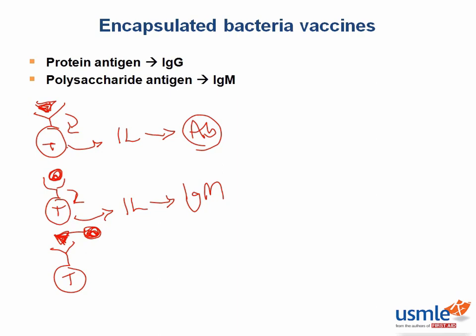This causes activation of the T-cell, secretion of interleukins, and IgG production. These interleukins induce B-cells to class switch and produce an IgG antibody against the polysaccharide.